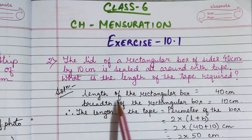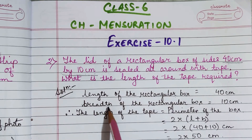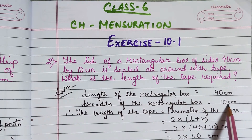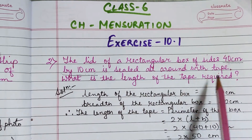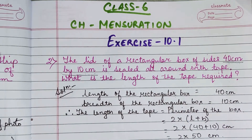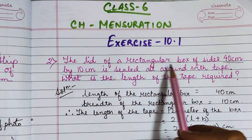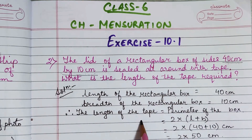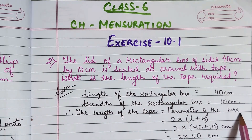We will write: length of rectangular box is equal to 40 cm, breadth of the rectangular box is equal to 10 cm. We have to find the length of the tape required. In this question it is told that the tape is all around the box, so to find the length of the tape, we have to find the perimeter of the box.